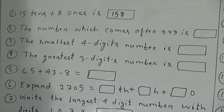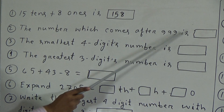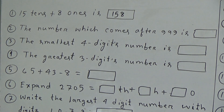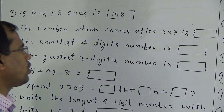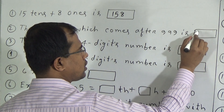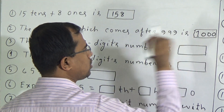Second question: the number which comes after 999 — that means the next number of 999. If we add 1 with 999, then we can get the number, and it will be 1000. So answer will be 1000.